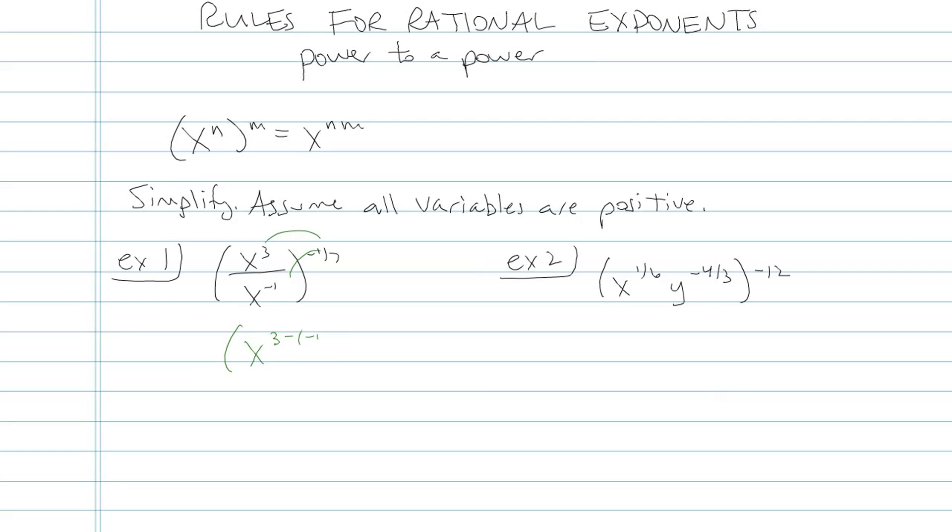That would be x to the three minus negative one, which of course is negative one-seventh. x to the three minus negative one is x to the fourth to the negative one-seventh power. Multiply those exponents, so I'd have x to the negative four-seventh power.